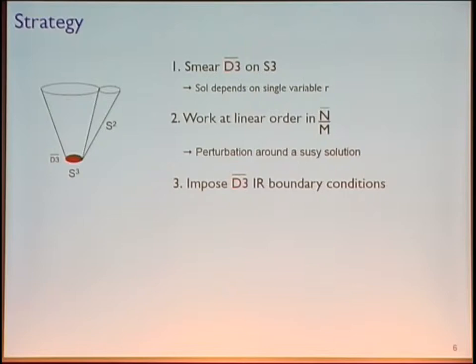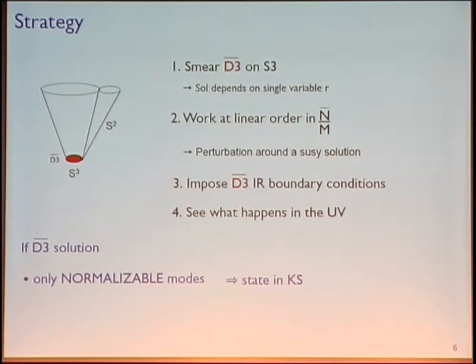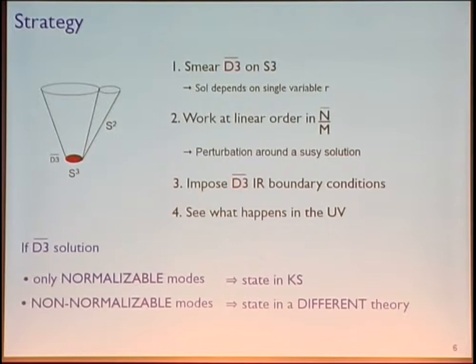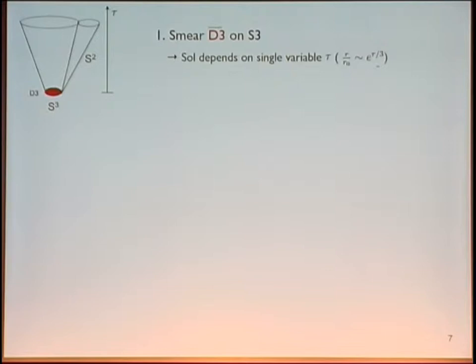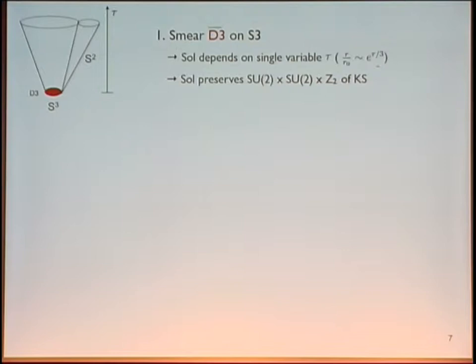We impose anti-D3 brane IR boundary conditions and see what happens in the UV. If the anti-D3 brane has only normalizable modes, then it's a non-supersymmetric state in a supersymmetric theory, which is fine. But if it has non-normalizable modes, then it is a state in a different theory. The smearing means we are not breaking any of the symmetries of the Klebanov-Strassler solution, which are SU(2) times SU(2) times Z2. We use the most general ansatz for the metric and flux that preserves this symmetry, which was built by Papadopoulos and Tseytlin.